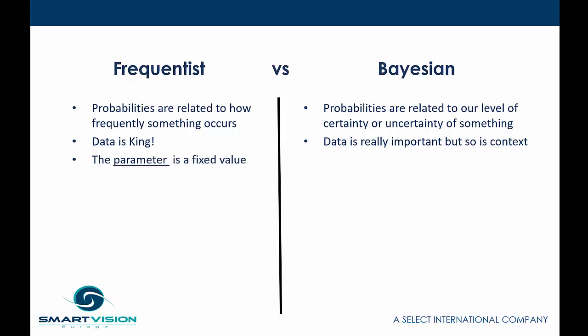In the frequentist approach, the parameter — whether a population mean, standard deviation, or a true correlation between two variables — is a fixed value that exists out there and is unknowable; you're trying to estimate it. In the Bayesian approach, the parameter is treated as a random variable: it's more of a zone within which a parameter lies, not a single fixed value, and it can take on different values depending on the situation.